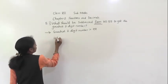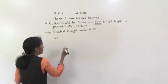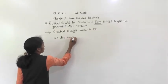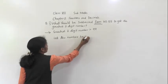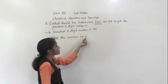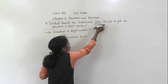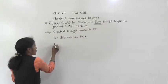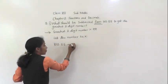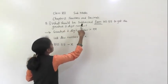Let the subtracted number be X. So, 102.55 minus X equals the greatest two-digit number. From word came — this number we write first. From this number, what should be subtracted? We consider X.